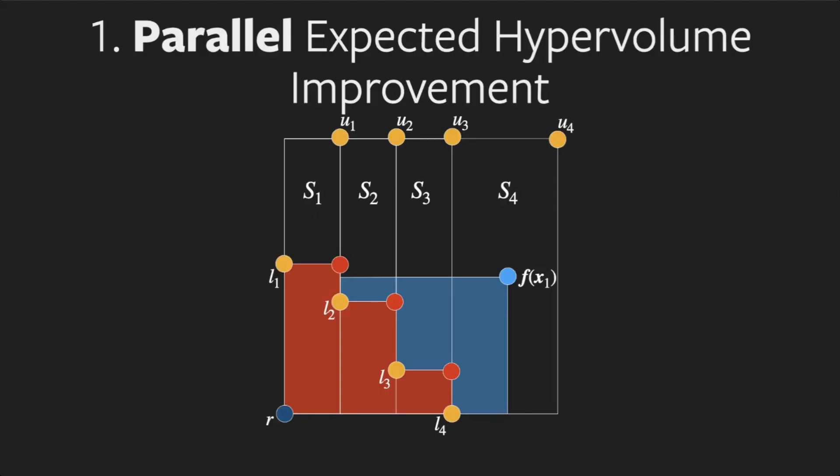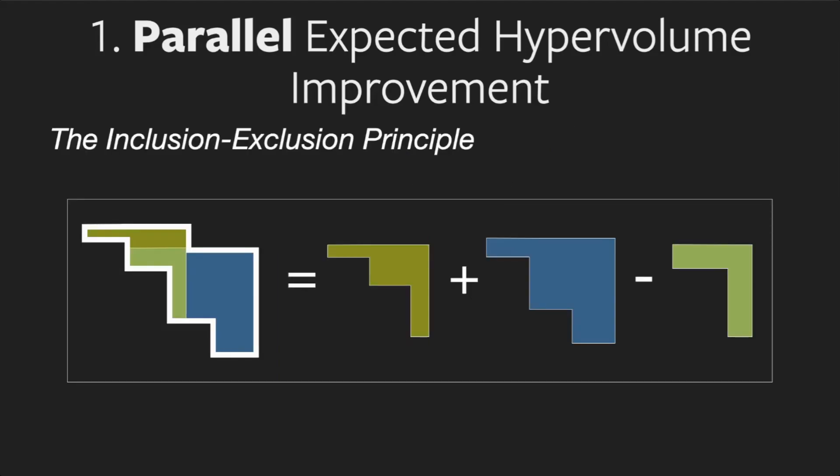Therefore, we propose a novel acquisition function to address these practical challenges. We consider parallel candidate generation by computing the joint hypervolume improvement from several candidate points. This joint hypervolume improvement can be computed in a highly parallel fashion using the inclusion-exclusion principle.